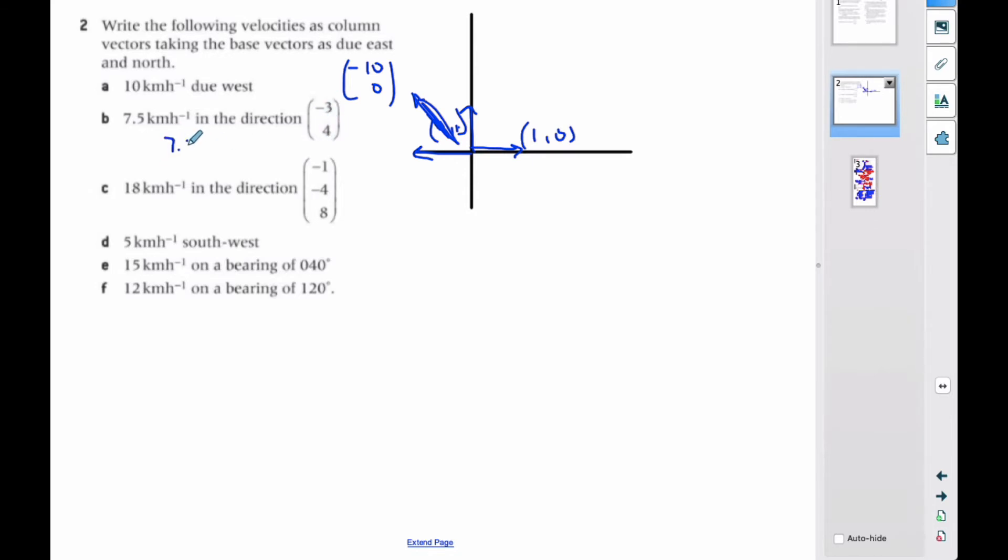So it's going to be 7.5 over 5, (-3, 4). This is this direction.